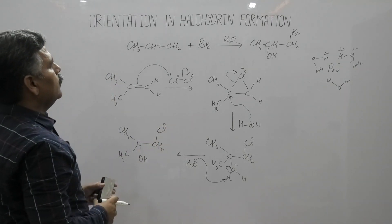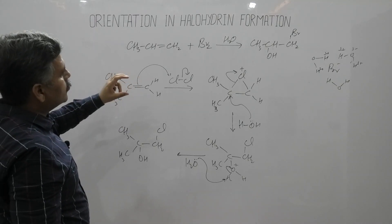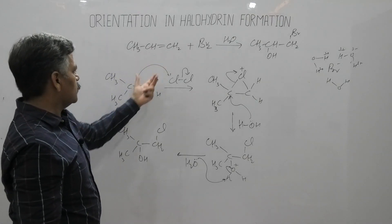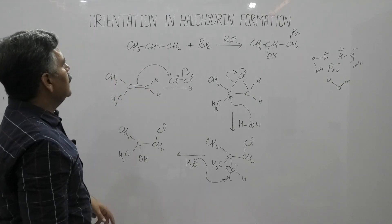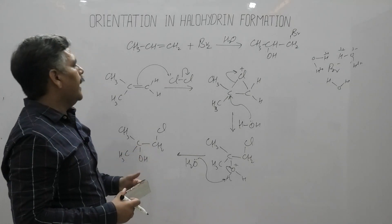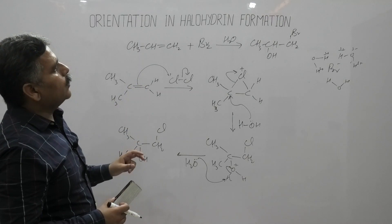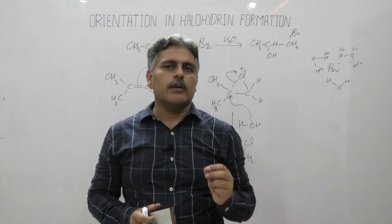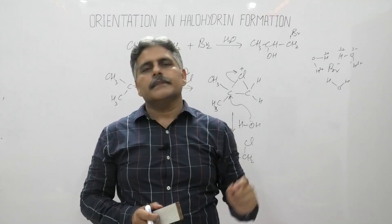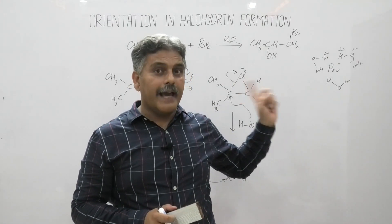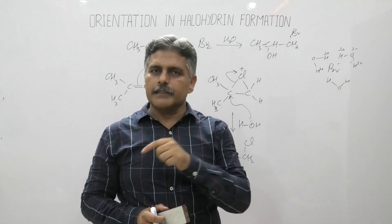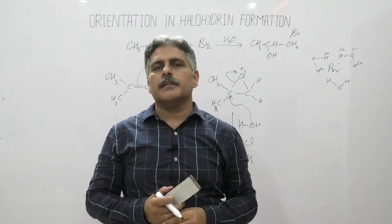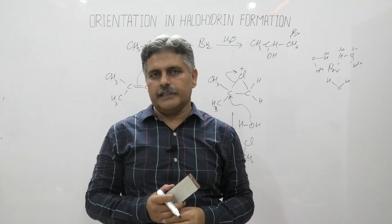This is another example of halohydrin formation. We can explain the orientation because the two carbons are non-equivalent — CH and CH₂ in the first example, and C and CH₂ in the second. These alkenes are unsymmetrical and follow the extended Markovnikov rule. In summary, the incoming halogen attaches at the less substituted carbon and hydroxyl from water attaches at the more substituted carbon, due to the stability of the intermediate. In the upcoming lecture, I will discuss the stereochemistry of halohydrin formation. Thank you very much.